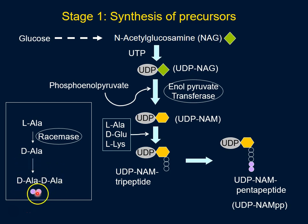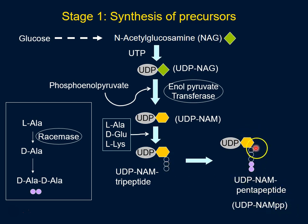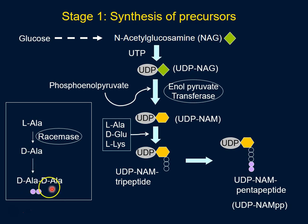In that pathway, the action of racemase is important. The dipeptide will be attached and we get this pentapeptide. So now let's talk about inhibitors of this stage of cell wall synthesis.